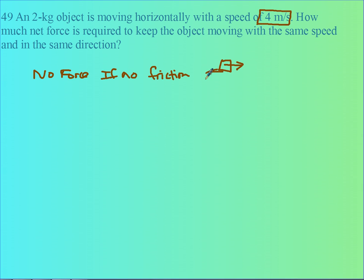If there is no friction, it takes no force to keep it moving, if there is no friction. But if there is friction, then the force will need to equal the frictional force. Then the force applied is going to have to equal the frictional force to keep it moving at a constant speed.